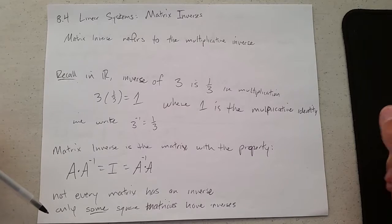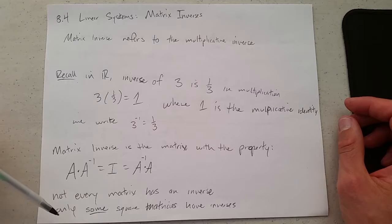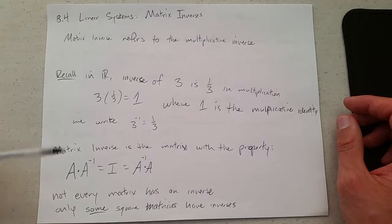The only inverses that exist are square matrices, and there's only a few square matrices that actually have inverses. So almost a vast majority of matrices do not have inverses, and we're going to figure out how to know if one matrix has an inverse or not.